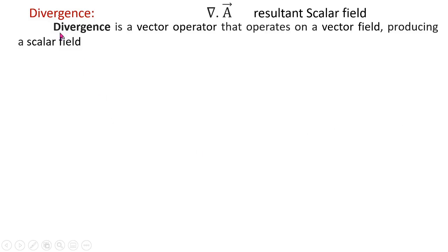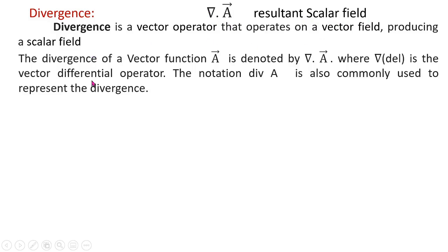In this lecture we are going to study the operation divergence. When we take the dot product of the vector differential operator del with a vector function A-bar, the resultant is a scalar field. Divergence is a vector operator that operates on a vector field producing a scalar field. The divergence of vector function A-bar is denoted by del dot A-bar, where del is the vector differential operator. It is also commonly written as div A.